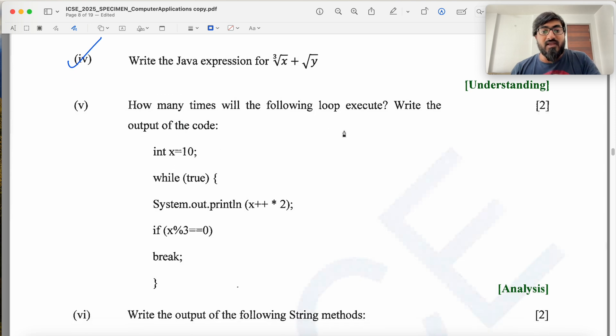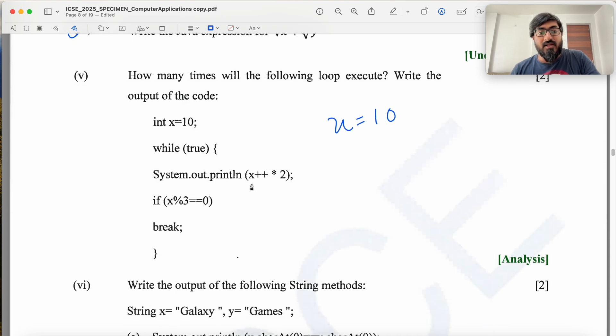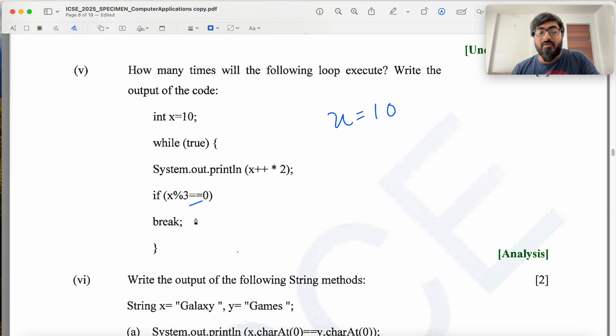How many times does the code execute. You start with X equal to 10. You say while true, you print X plus plus into 2. If X percent 3 equal to 0, we break. So you're printing X into 2, then incrementing X. You're printing X into 2, X is 10, you print 10 into 2, you print 20. Then X is incremented by 1, X becomes 11. X percent 3 is equal to 0 is false, you go back again. You print X into 2 which is 22. X is incremented by 1, X becomes 12. 12 percent 3 is equal to 0 is true, you break. So the loop runs twice and the output is 20 and 22.